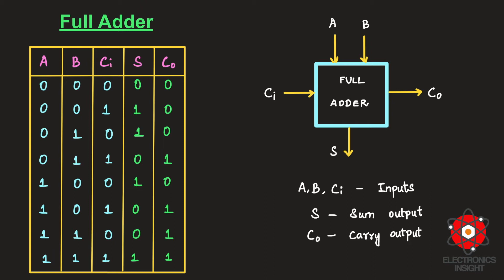The truth table for the full adder with sum and carry output is shown here. Using this truth table, we are going to identify the boolean expressions and rearrange them to optimize for implementation of the full adder using static CMOS design. In the next slide, we will see how to derive the boolean expression using the K-map technique.